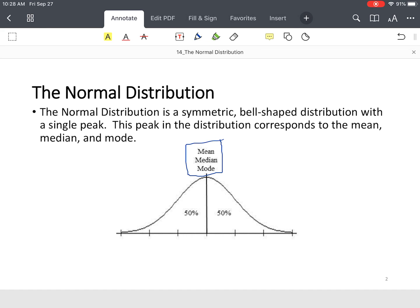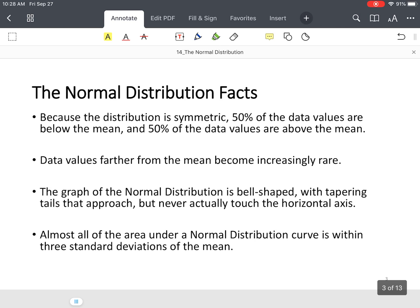Let's talk about some more facts. Since this is a normal distribution, it's bell-shaped with a single peak. 50% of the data is to the left or below the mean, 50% of the data is to the right or above the mean. The data values in the tails or towards the tails are rare, because normally all that data is within what they call three standard deviations.